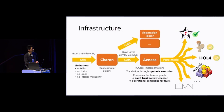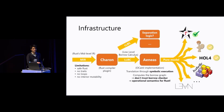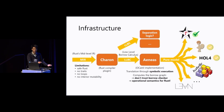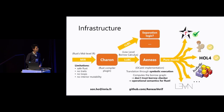From an engineering perspective, significant work went into the Charon compiler plugin, whose goal is to provide a user-friendly interface with the Rust compiler. It is designed to be completely independent from AENEAS, supports unsafe code, and is reusable for other projects. We would also be interested in using it to link to a separation logic framework to handle unsafe code.